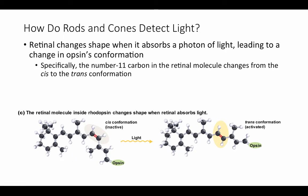Specifically, carbon number 11 in the retinol molecule changes from the cis to the trans conformation when light is absorbed. Retinol works like a light switch. This should remind you of the phytochromes we saw when looking at plant responses to red and far-red light. Unlike plants, where one kind of light switches it one way and another kind switches it back, in the case of retinol, light changes its shape and then after a certain amount of time it's converted back to its original state — it doesn't need to be exposed to another kind of light to switch back.